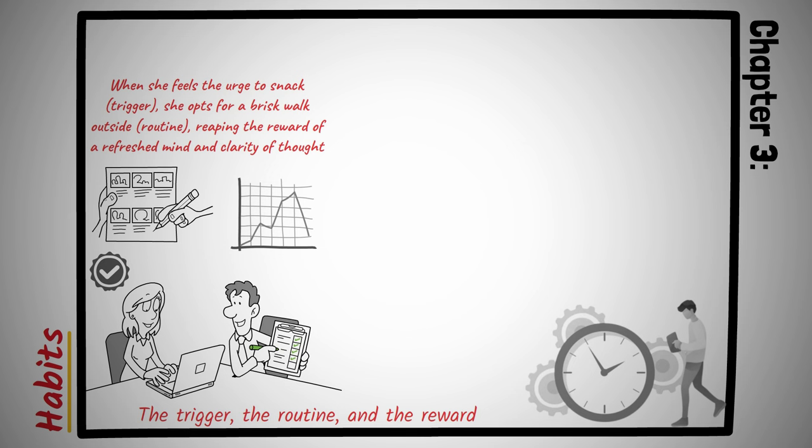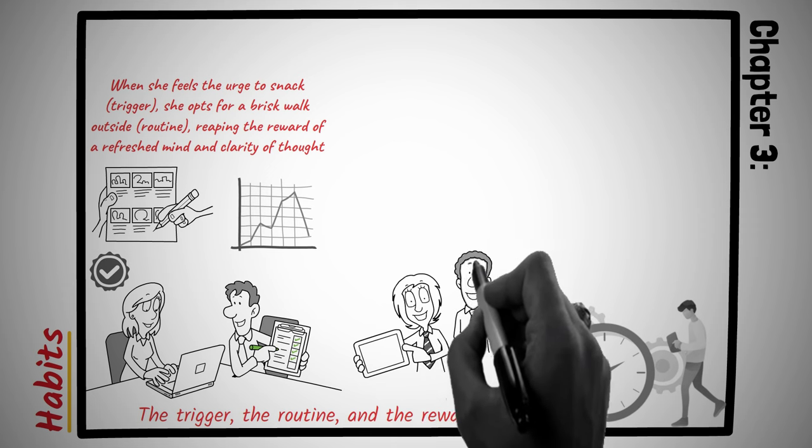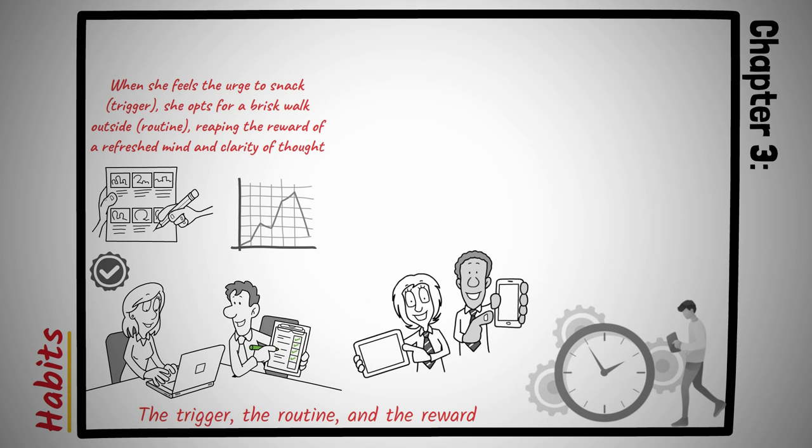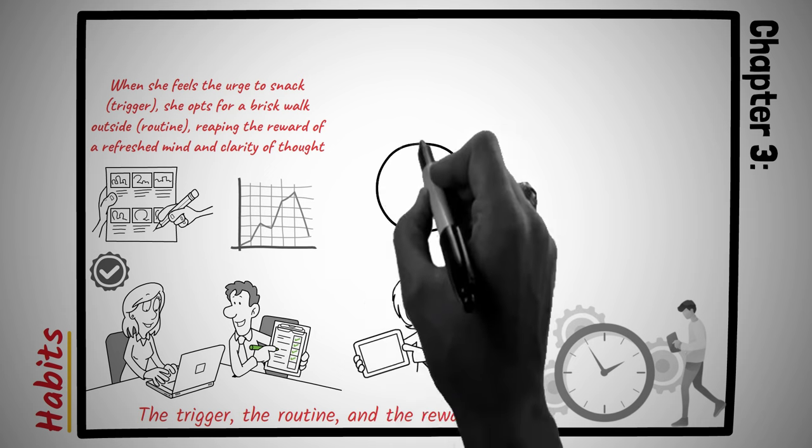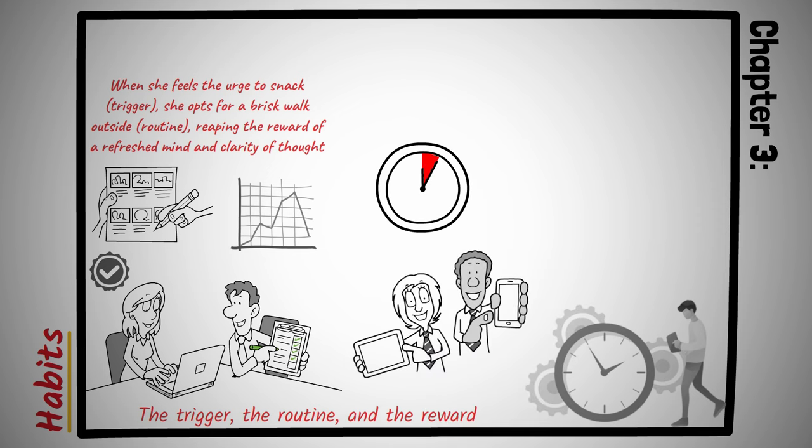Let's relate this to a broader context. Many of us might have the habit of checking our phones first thing in the morning. The trigger could be the alarm. The routine is scrolling through social media, and the reward is the dopamine rush from likes and notifications. To change this habit, we could replace the routine. After the alarm rings, instead of reaching for the phone, we could grab a book and read for a few minutes. Over time, the reward will shift from fleeting dopamine hits to the satisfaction of gaining knowledge.